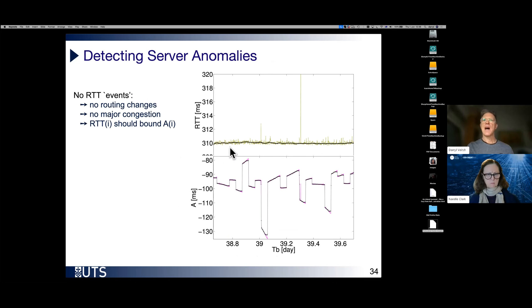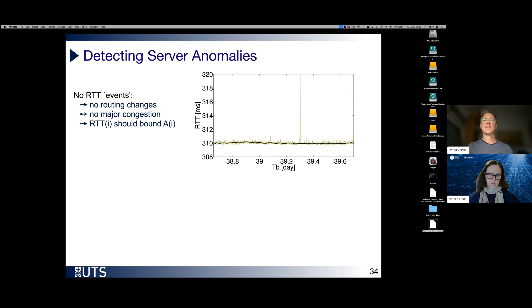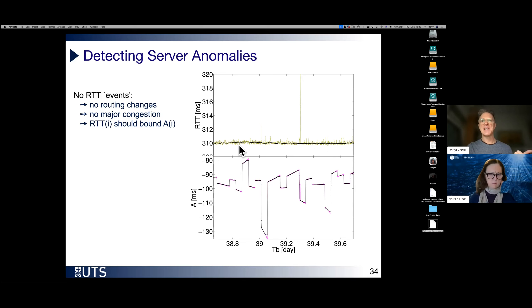In this case, what do we see? RTT again, nothing much happening as we saw before. So in particular, we know there are no significant changes in routing. We know there is no major congestion. What's happening in asymmetry? Well despite that, there's a huge amount happening here. Look, these are tens of milliseconds.